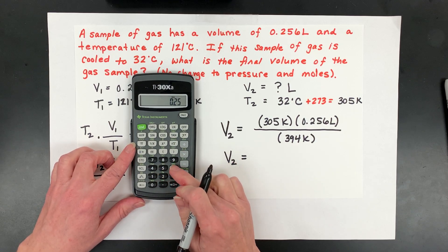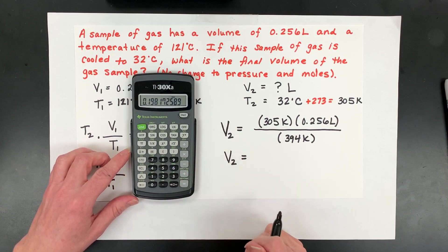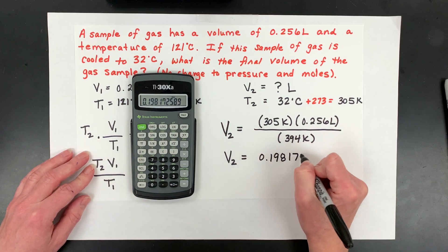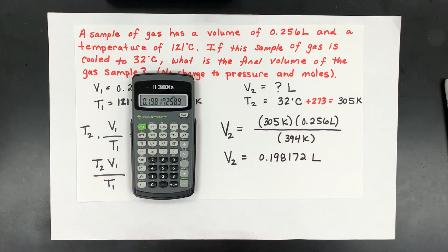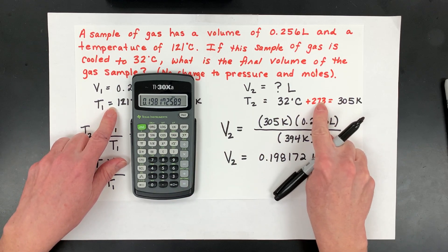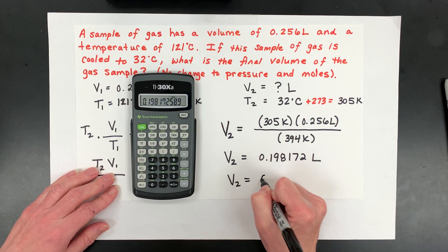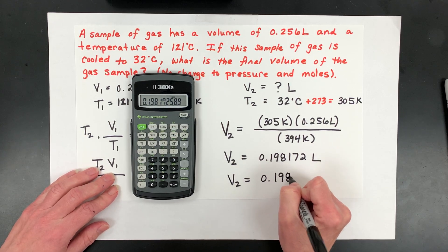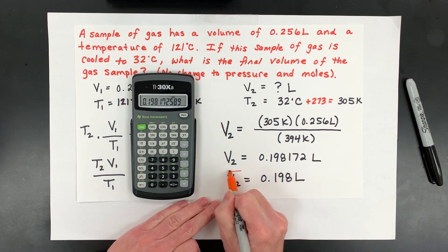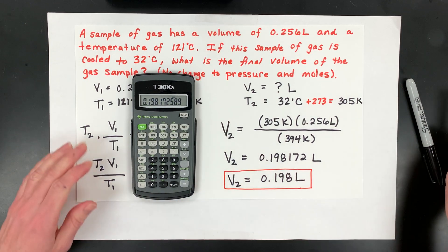I'll just calculate this with you. So you take 305 times 0.256 and then divide it by 394. And I get 0.198172. I'm going to stop writing them because I have three sig figs in everything. I gained some sig figs when I converted it to Kelvin. So V2 is going to actually be 0.198 liters. But what I want you to always do, because you're going to make human errors for sure. Copy things down wrong, calculate something down wrong.